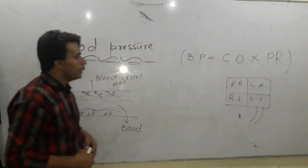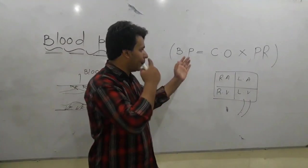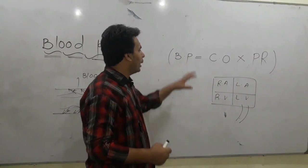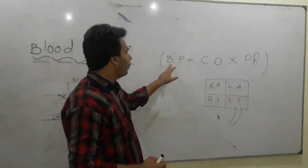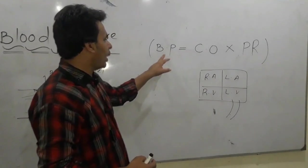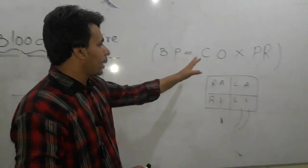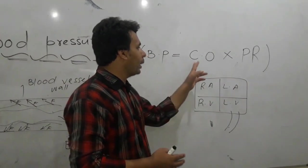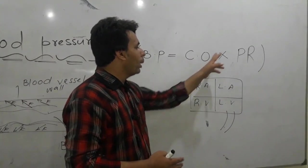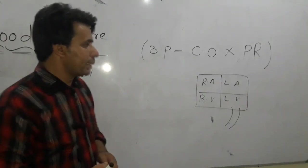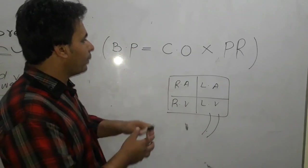Now the another definition of blood pressure, which is the mathematical definition, is that blood pressure — BP is the short form of blood pressure — blood pressure is equal to cardiac output multiplied by peripheral resistance.